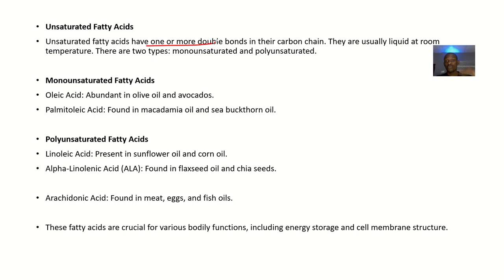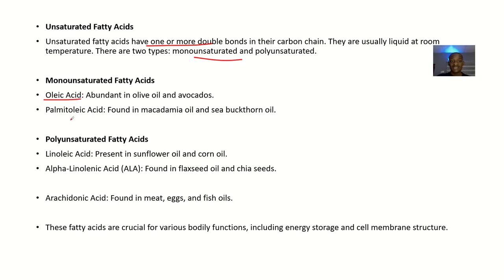For unsaturated fatty acids, these are fatty acids that have one or more double bonds in the carbon chain. They are usually liquid at room temperature. There are two types: monounsaturated and polyunsaturated.